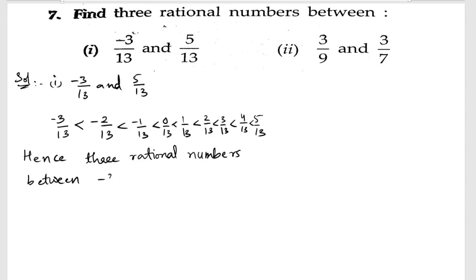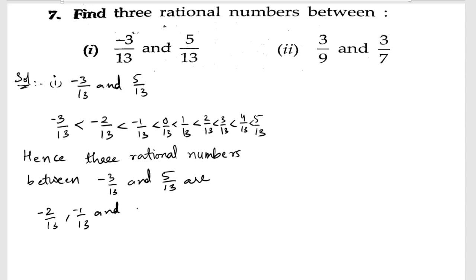Between -3/13 and 5/13 we can select any three. So here we are going to take the first three: -2/13, -1/13, and 0. Now let us do the second part.